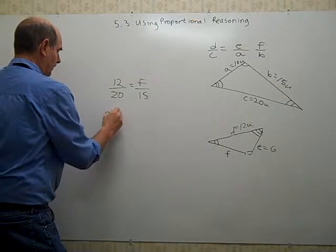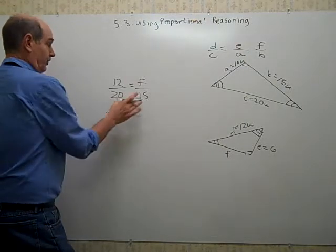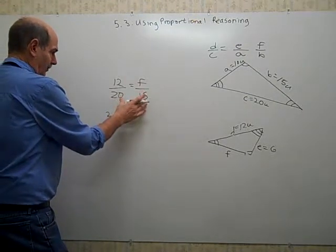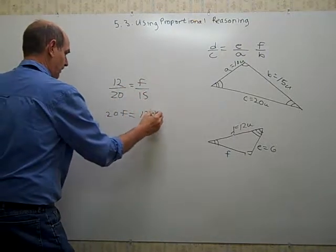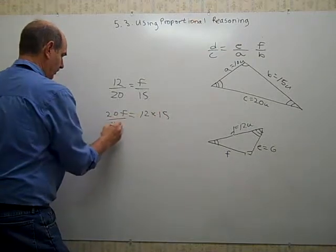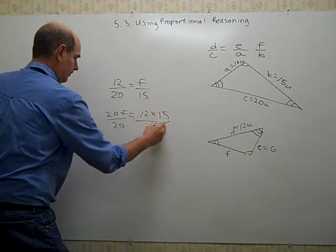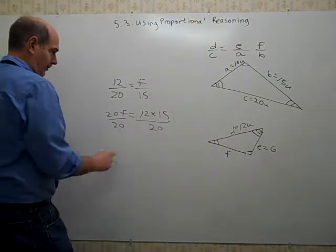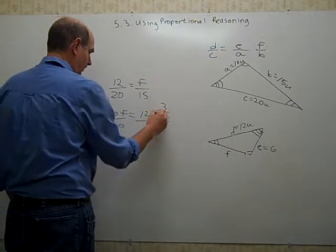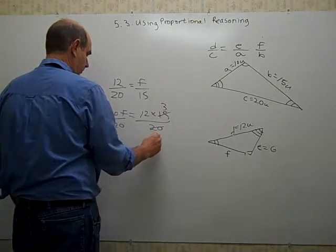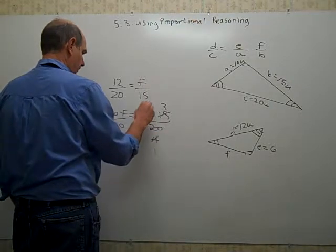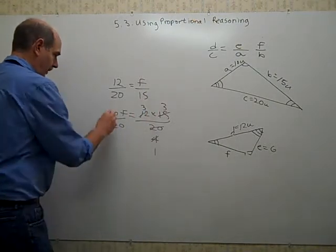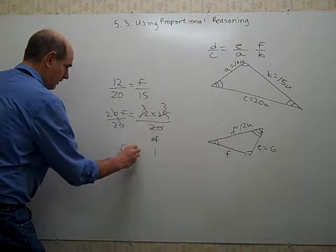So I can say 20 times F. This is a little harder to see, but what do you multiply 15 by to get 20? So I'm going to go ahead and do the cross multiplying. 12 times 15, divide both sides by 20. Looking for some common factors. Let's see 5 goes into 15, 3 times, 5 goes into 20, 4 times. Then 4 goes into 4 one time, and 4 goes into 12 three times. So F must equal 9 units.